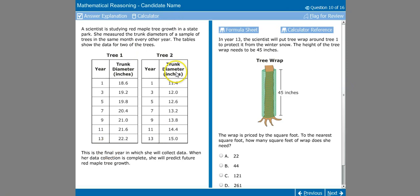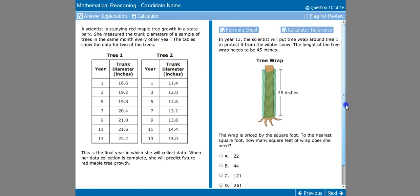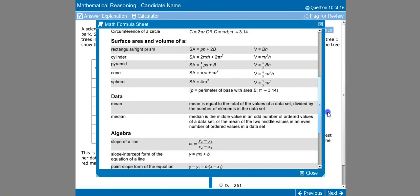We're going to look at this data we've already read. In year 13, the scientist will put the tree wrap around tree one to protect it from the winter snow. The height of the tree wrap needs to be 45 inches. Now we see what kind of shape this is shaping up to be. It's a cylinder. But now the wrap is priced by the square foot to the nearest square foot. How many square feet of wrap does she need? We're going to go to our formula sheet and we see the formulas that they give us here. We're going to look at the surface area of the cylinder. The surface area of the cylinder is 2 pi r times the height plus 2 pi r squared.